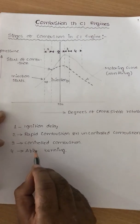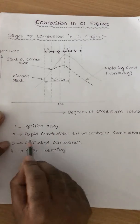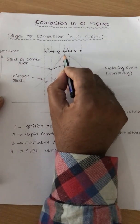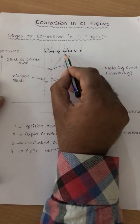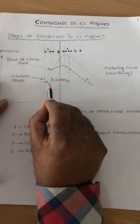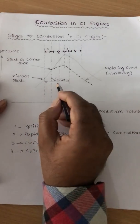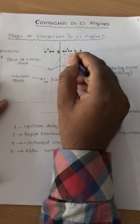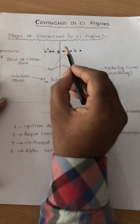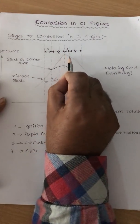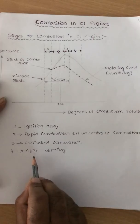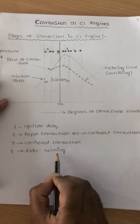The third stage is controlled combustion. After reaching the maximum pressure and temperature, we cannot conclusively say that combustion ends, because even after reaching maximum pressure and temperature, the fuel injection is still taking place. That means fuel is continuously injecting even after reaching maximum pressure and temperature. So the controlled combustion period accounts from the point where maximum pressure and temperature occur to the point where fuel injection stops. This is the point where fuel injection stops — that is the third stage, controlled combustion.